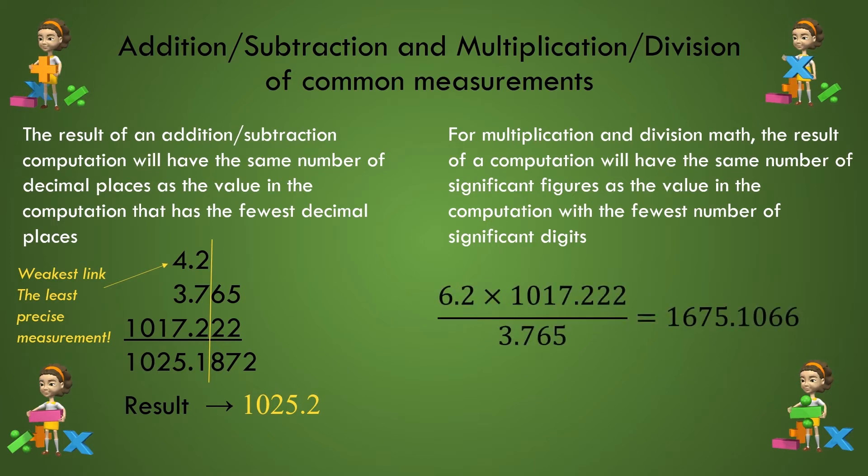In the computation shown, we are going to do a multiplication division calculation with three values. Utilizing the rule, we identify the value 6.2 as the one with the least number of sig figs, 2. Thus, the result must have two sig figs.